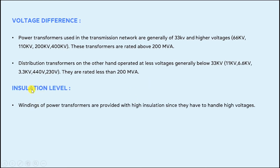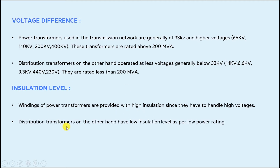The next point is the insulation level. The windings of power transformers are provided with high insulation since they handle very high voltages. Whereas distribution transformers have a low insulation level as per their low power rating, which is lower compared to power transformers.